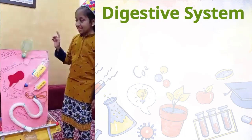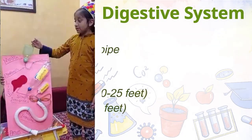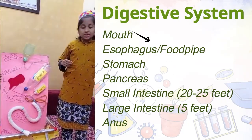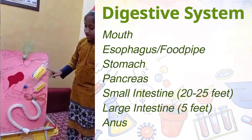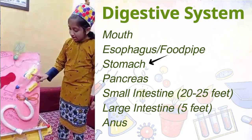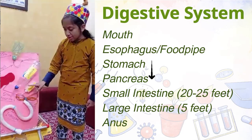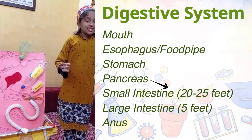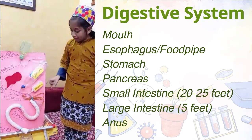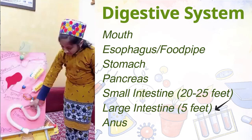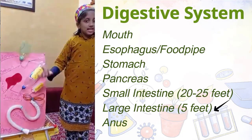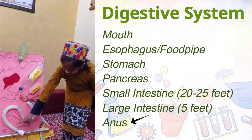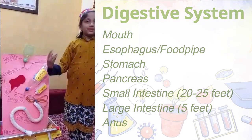In this system, the food comes from the mouth, then it goes to the esophagus, also called the food pipe. Then it goes to the stomach, then from there it goes to the pancreas, from there to the small intestine. The small intestine is 20 to 25 feet long, and from there it goes to the large intestine, which is five feet long, and then it comes out from there.